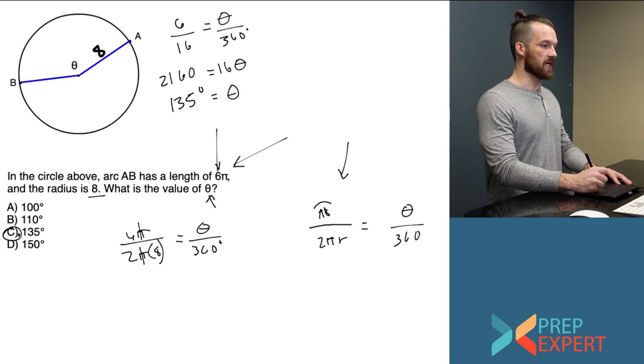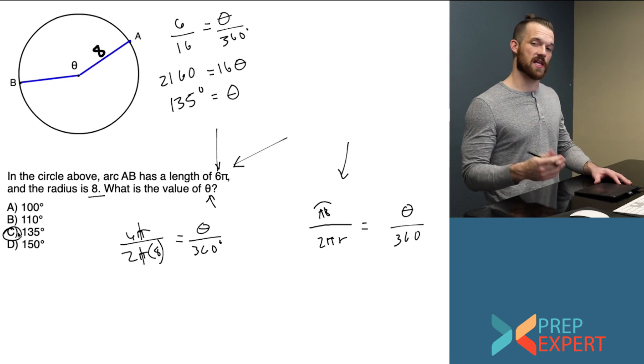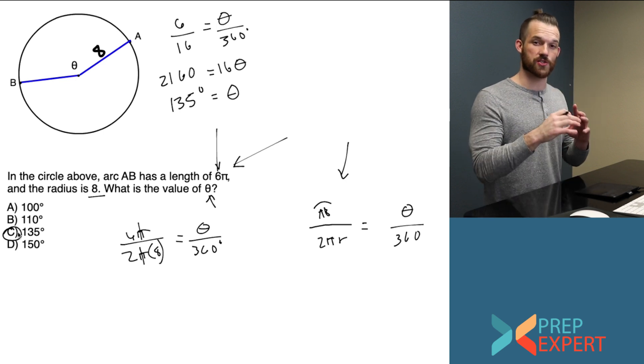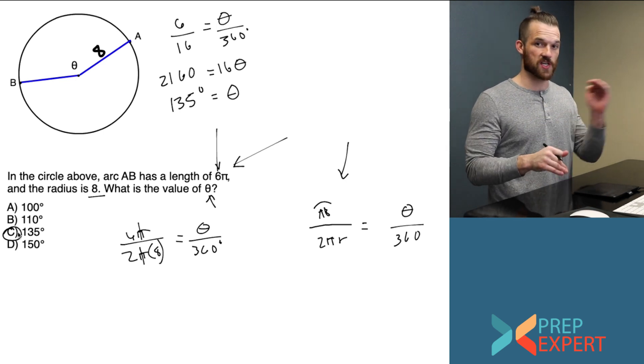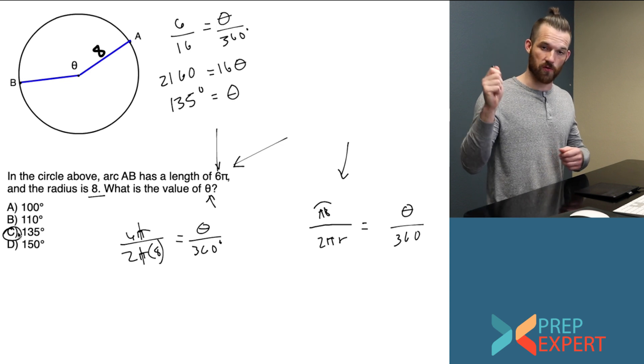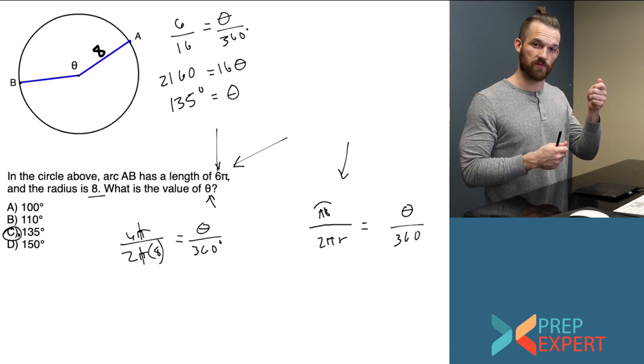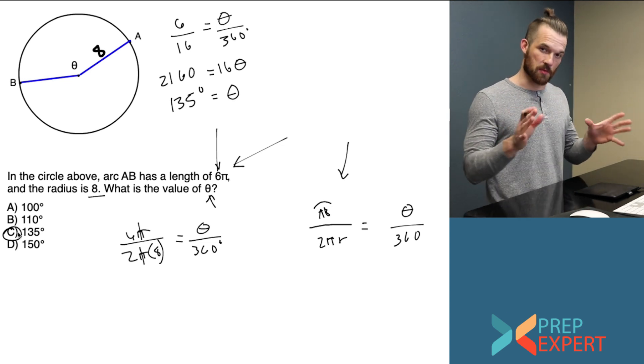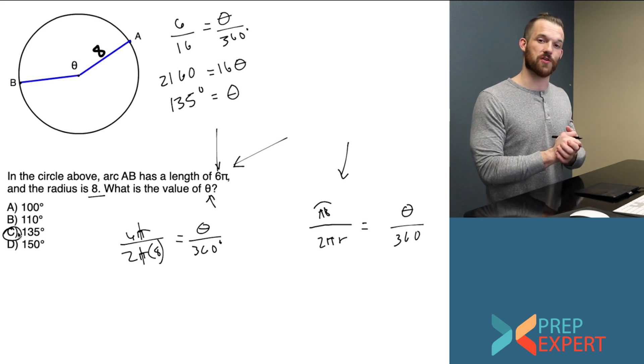And it's really that simple. Again, all you have to remember is that the part over whole relationship is always constant for any sector and circle. Pick the ratio that you need to solve for and pick the ratio that they give you enough information to know. Set them equal to each other and that's all you have to do to get the problem right.